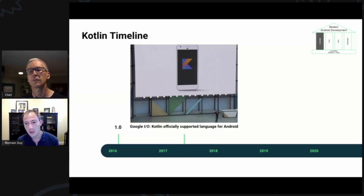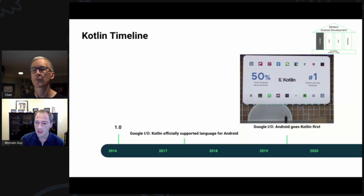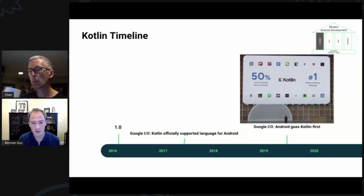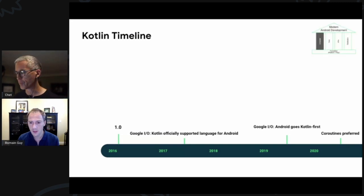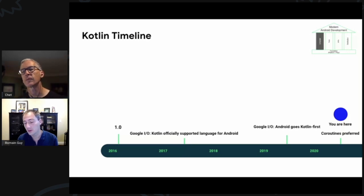Listening to developers, we heard loud and clear that many wanted to use Kotlin. So in 2017 at Google I/O we officially announced support for Kotlin — meaning we are committed to not breaking it in our toolchain and thinking about Kotlin-friendliness when introducing new platform APIs. We kept working with Kotlin, saw great adoption, incorporated it into libraries with Kotlin extensions for core platform APIs and Jetpack libraries. Last year at Google I/O we announced Android goes Kotlin-first, and this year we announced coroutines as our recommended async programming solution.